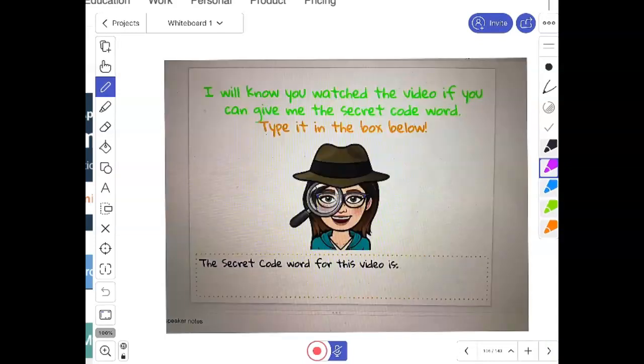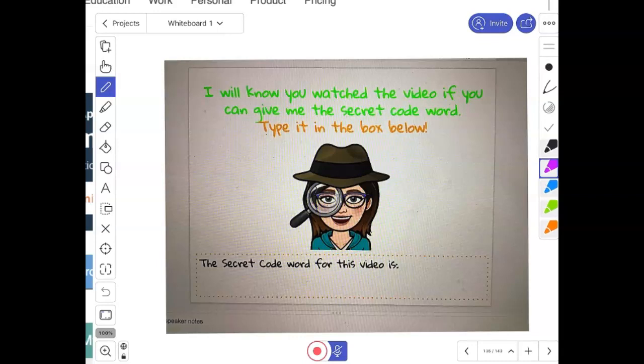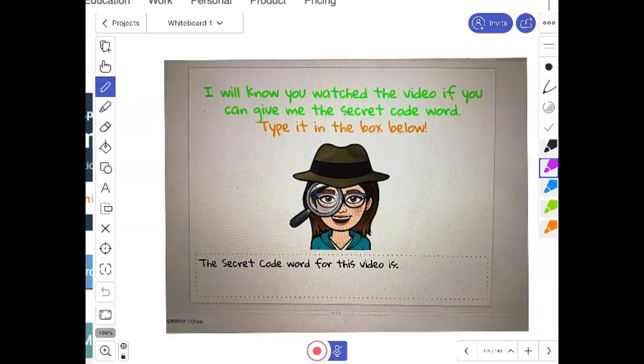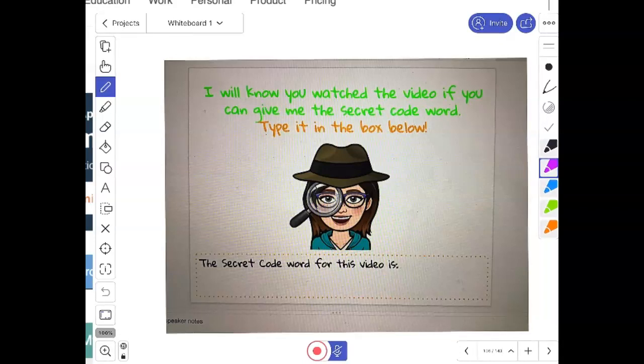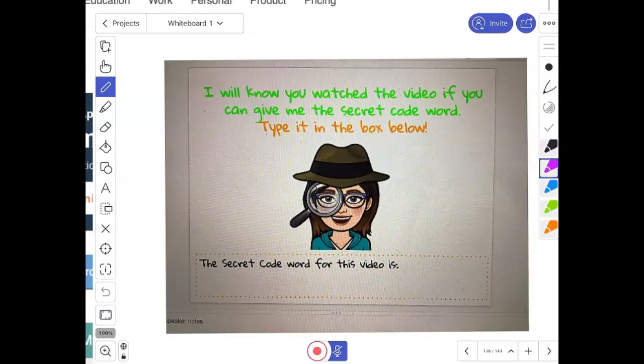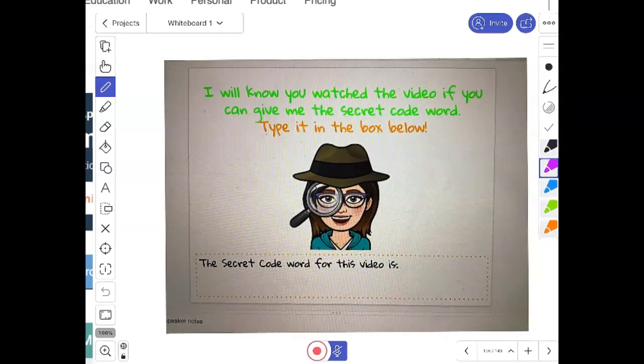So in the Google slideshow you're gonna come across three slides that look like this. Now they might have different graphics on them but they essentially all say the same thing. I'll know you watched this video if you can give me the secret code word. Type it in the box below. The secret code word for this video is. So you have three videos this week which means you're collecting three code words. So while you're taking notes in today's video, at some point I'm gonna say, stop, write down this code word, you'll need it in your slideshow.